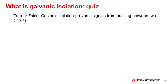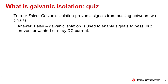Question number one. True or false? Galvanic isolation prevents signals from passing between two circuits. False. Galvanic isolation is used to enable signals to pass, but to prevent DC currents and unwanted stray AC currents.